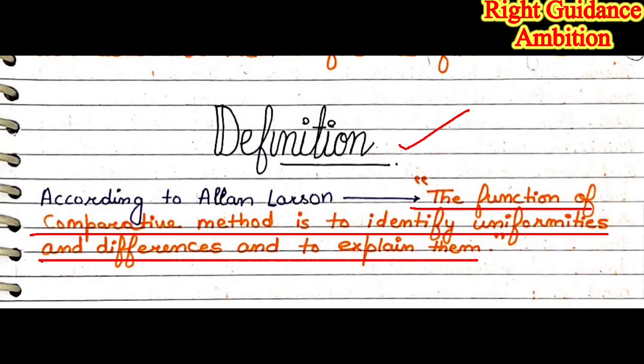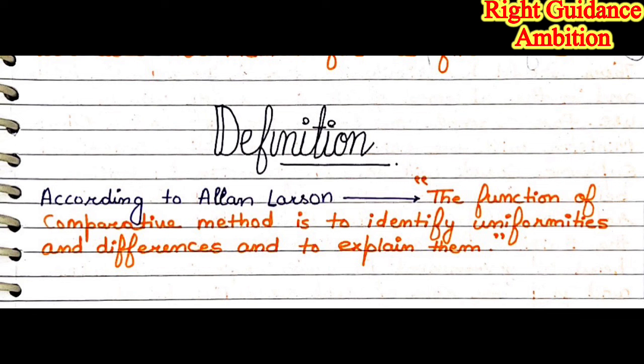Next, write the definition. The definition should be to the point — you can write it from any author or scholar but write it only once. According to Ellen Larson, the function of comparative method is to identify uniformities, differences, and to explain them. The main function of comparative method is to identify what is similar and what is different in two systems, and then explain it.